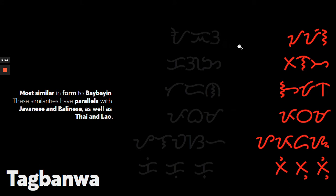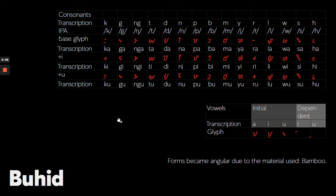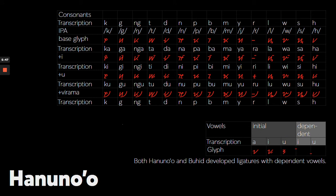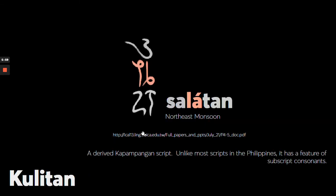This script has evolved in many places in the Philippines. In Palawan, we have Tagbanwa, which is the most similar in form to Baybayin. There are parallels in other Southeast Asian countries — in Indonesia, Javanese and Balinese have the same similarity; we also have Tai and Lao. Then we have Buhid and Hanunoo, whose forms became angular due to the constraints of bamboo and blades, and they also developed ligatures with dependent vowels. We also have Kulitan, a derived Kapampangan script, which unlike most Philippine scripts has a subscript consonant set and a vowel lengthener.